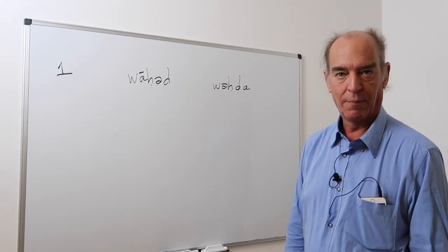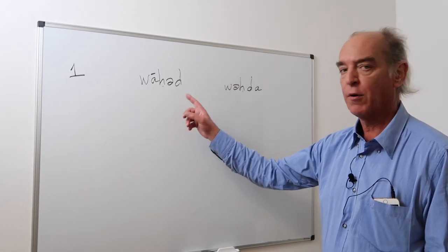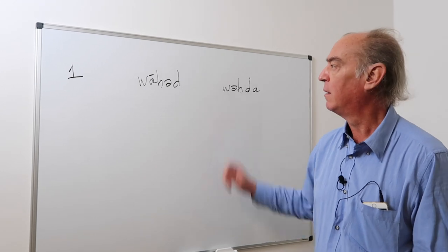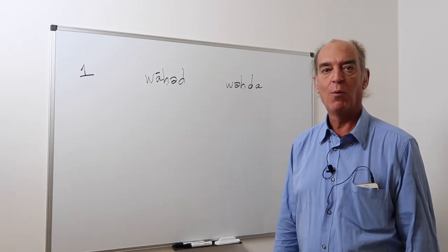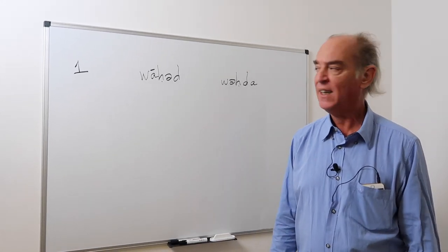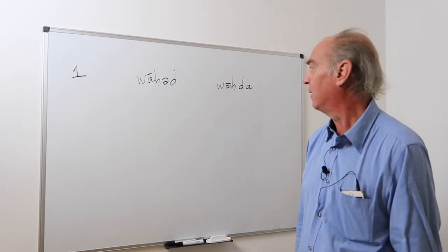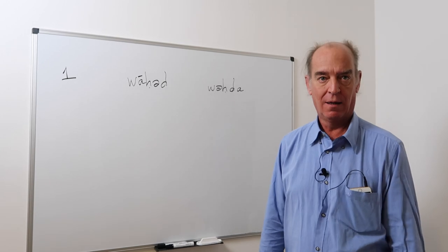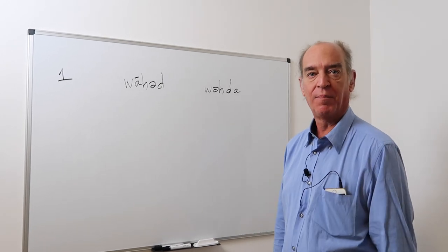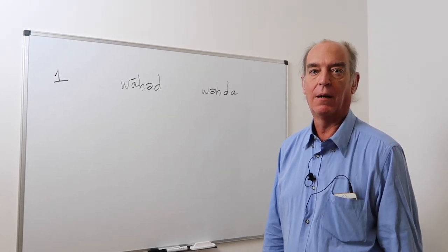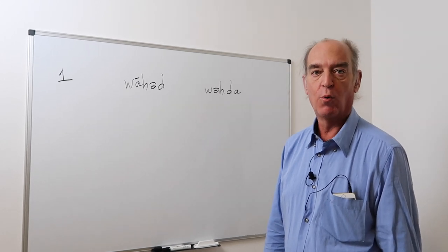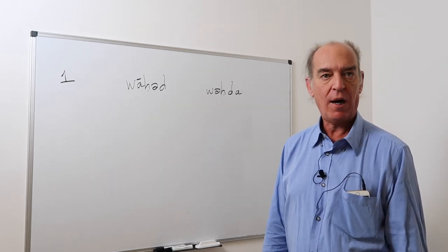This is for 1, and it has two forms, masculine and feminine. In masculine, you say waahd, with a strong ha. And the feminine form is wahda. If you're speaking about a man, you say waahd. Of a woman, you say wahda.